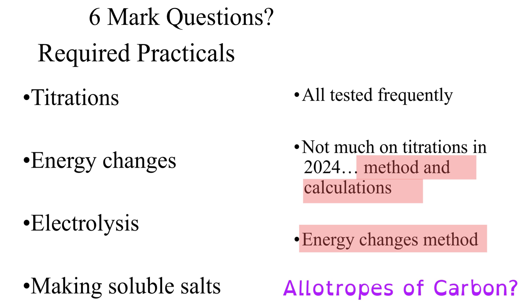Beyond this, another potential high-likelihood topic could be the allotropes of carbon, particularly given that diamond, graphite, and fullerenes have not been assessed very recently.